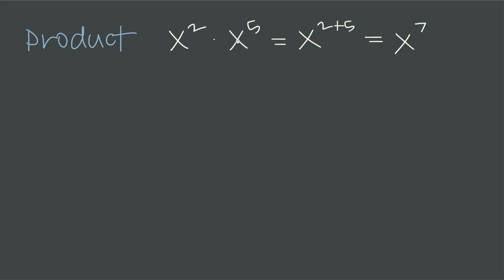Now things get a little more complicated — what do we do when combining negative exponents with other exponent rules? We know the product rule: when we multiply terms with like bases, we add the exponents. So x squared times x to the fifth is x to the 7. When we introduce a negative exponent, nothing really changes. If we have x to the positive 2 times x to the negative 5, the rule is still the same — we add the exponents: 2 plus negative 5, or 2 minus 5, giving a resulting exponent of negative 3. The product rule for exponents still holds.